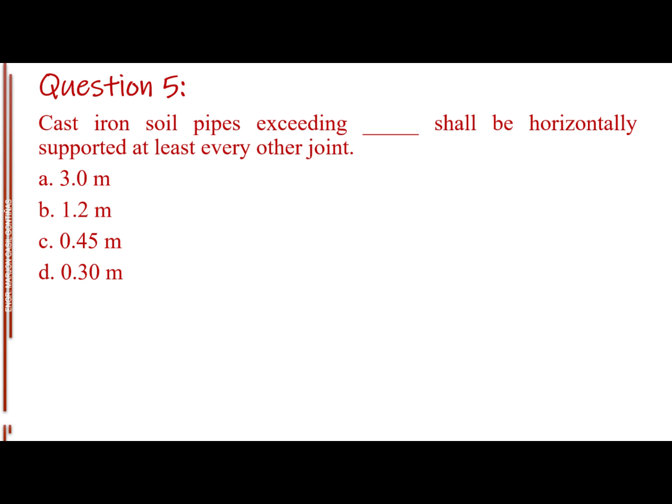Question number five. Cast iron soil pipes exceeding blank shall be horizontally supported at least every other joint. Letter A, three-point-zero meters. Letter B, one-point-two meters. Letter C, zero-point-four-five meter. Letter D, zero-point-three-zero meter. The answer is letter B, one-point-two meters.